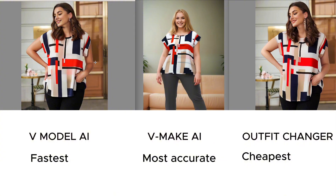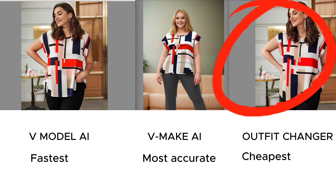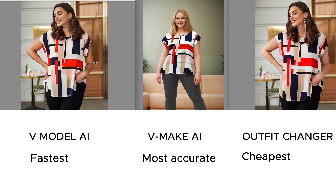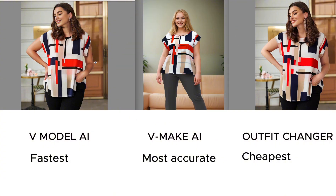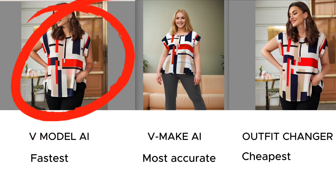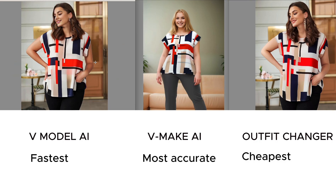What do you think about these images? Which is your favorite? Which would you use? I have links to every single one of them in the description. You can choose your favorite or try all of them like I did. If you don't care about accuracy, use Outfit Changer. If you're looking for super high quality images, use vMake. If you're looking for something right in between and want to change tops and bottoms without breaking the bank, use vModel. Let me know what you think in the comments and don't forget to subscribe.